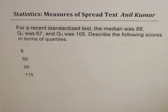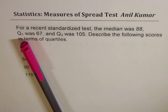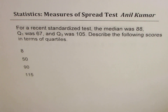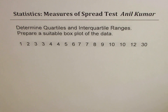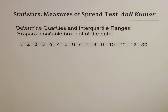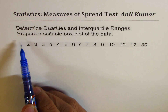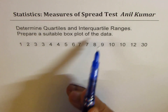So we'll have one question like this: for a recent standardized test, the median was 88, Q1 was 67, and Q3 was 105. Describe the following scores in terms of quartiles — the scores are 85, 90, and 115. You can pause and answer. However, we are going to begin from the third example, which says we need to determine quartiles and interquartile ranges for given data and prepare a suitable box plot.